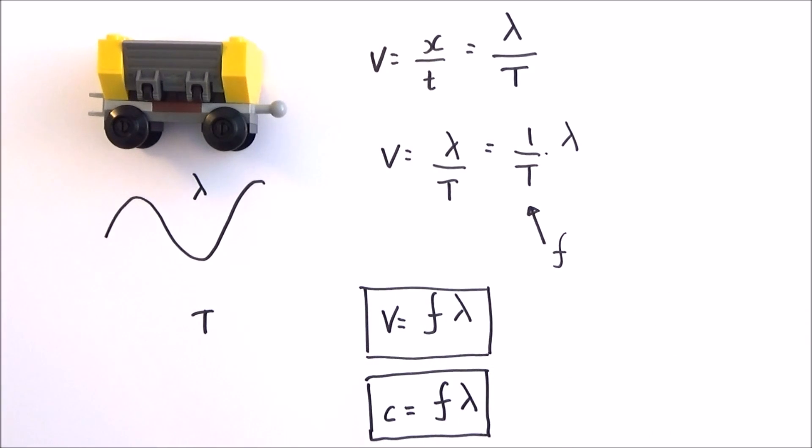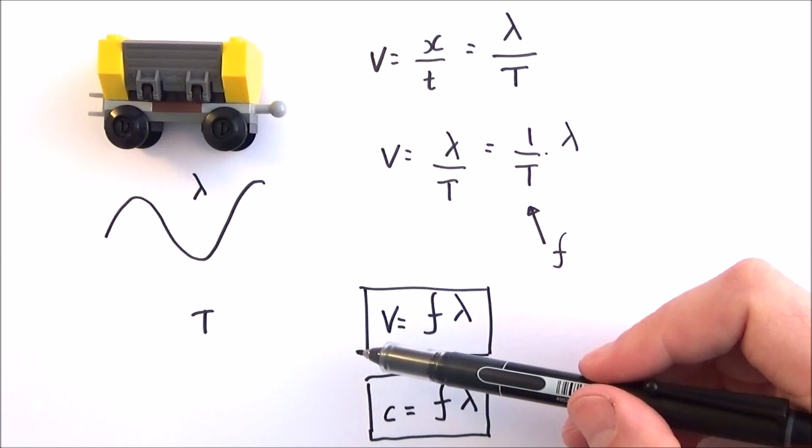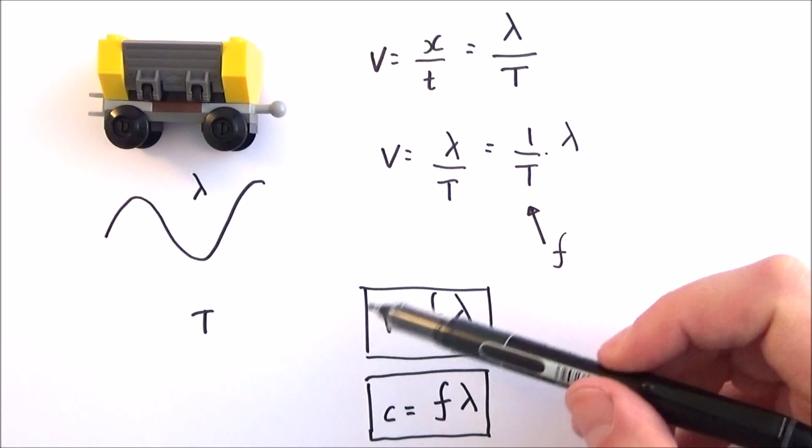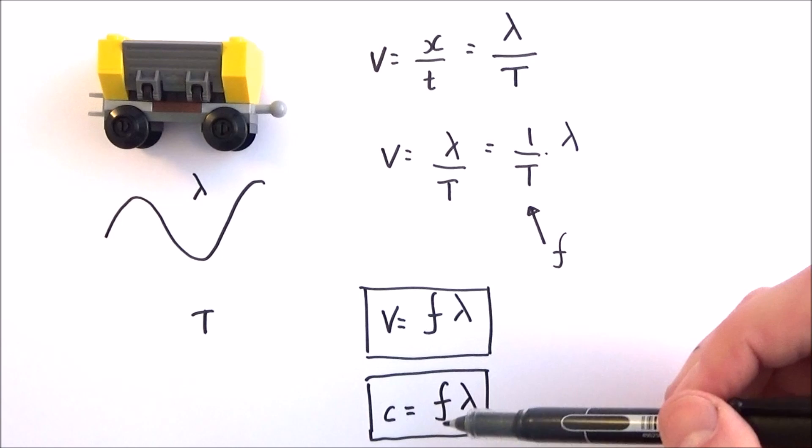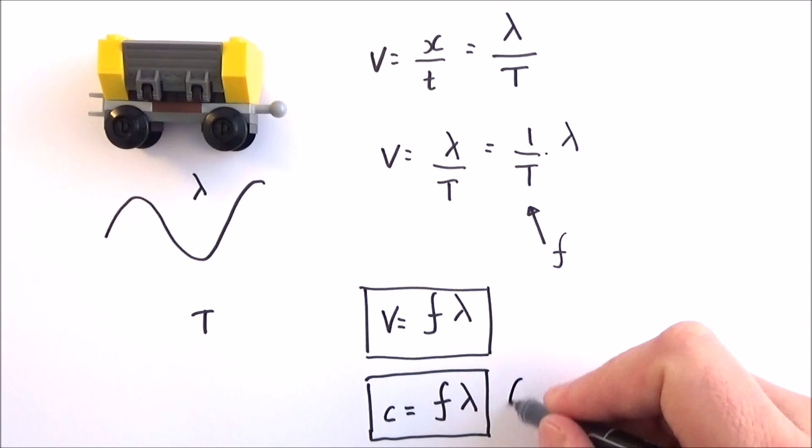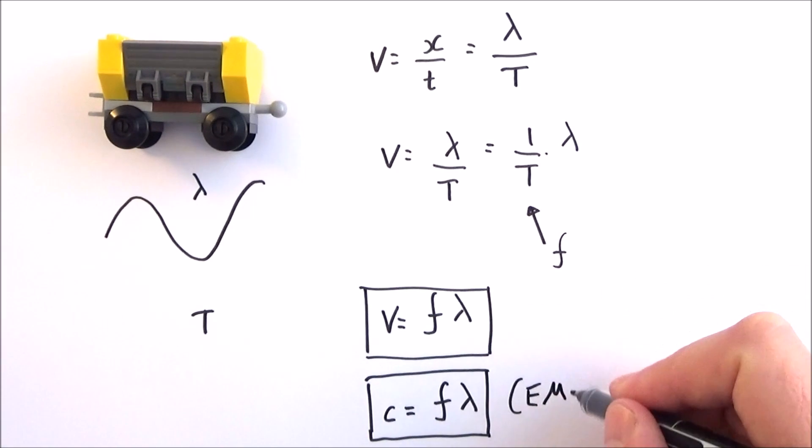So the wave equation: the wave speed is equal to the frequency times the wavelength, or the speed of light is equal to frequency times the wavelength. But this one here is only for EM waves.